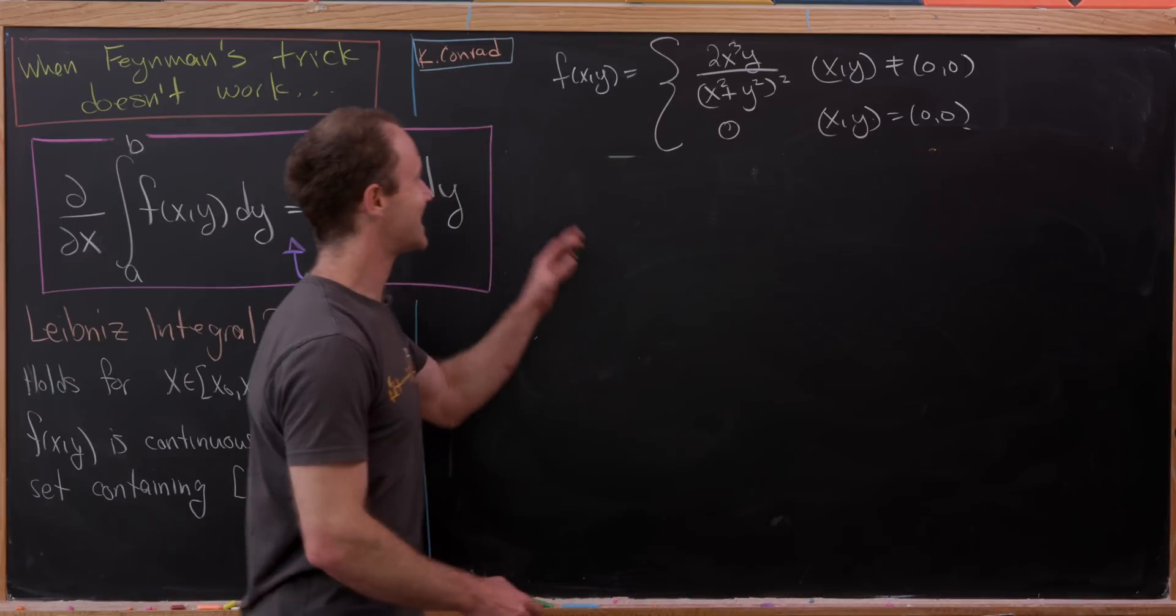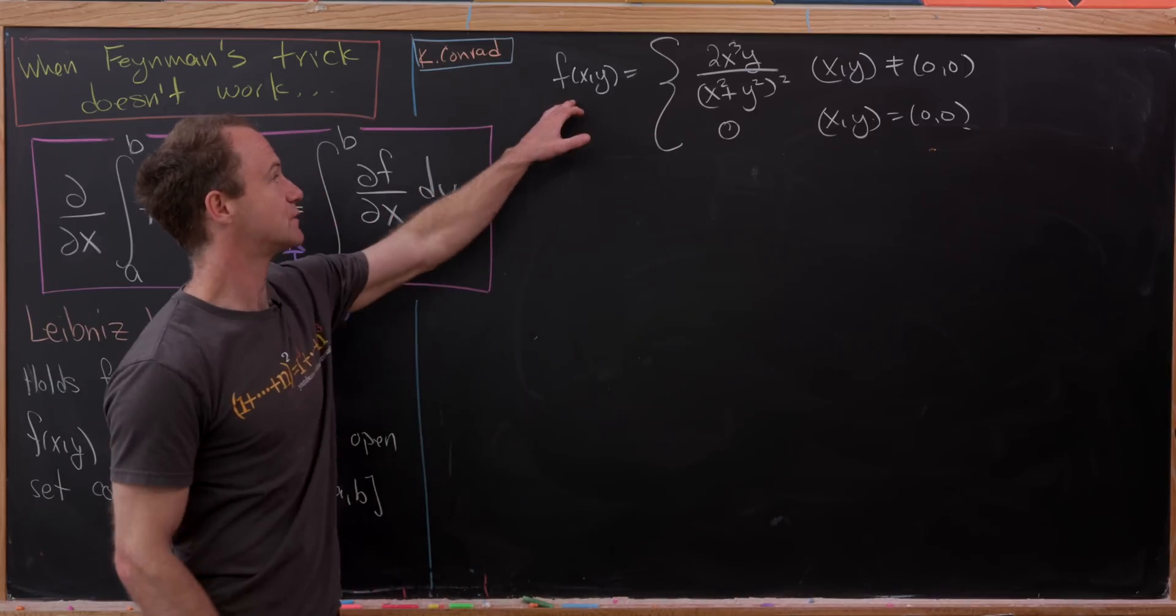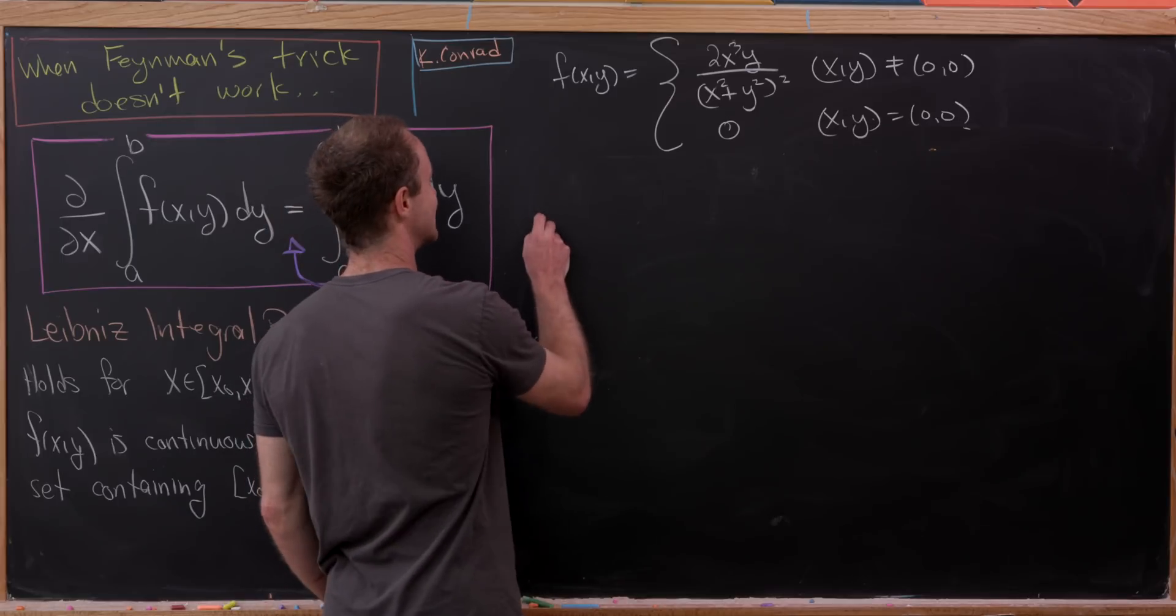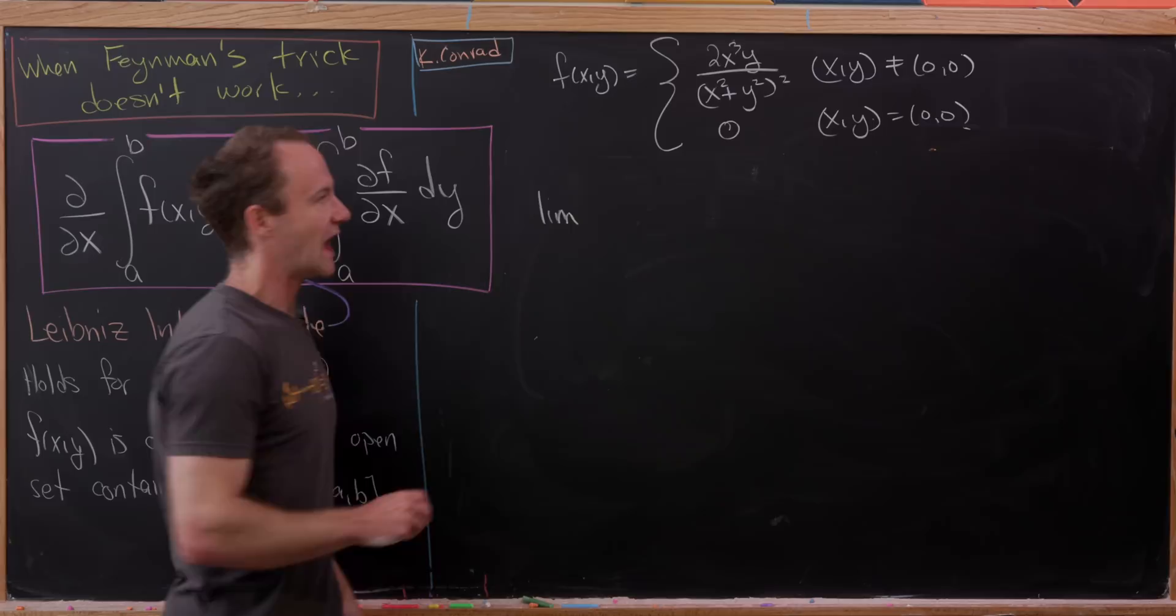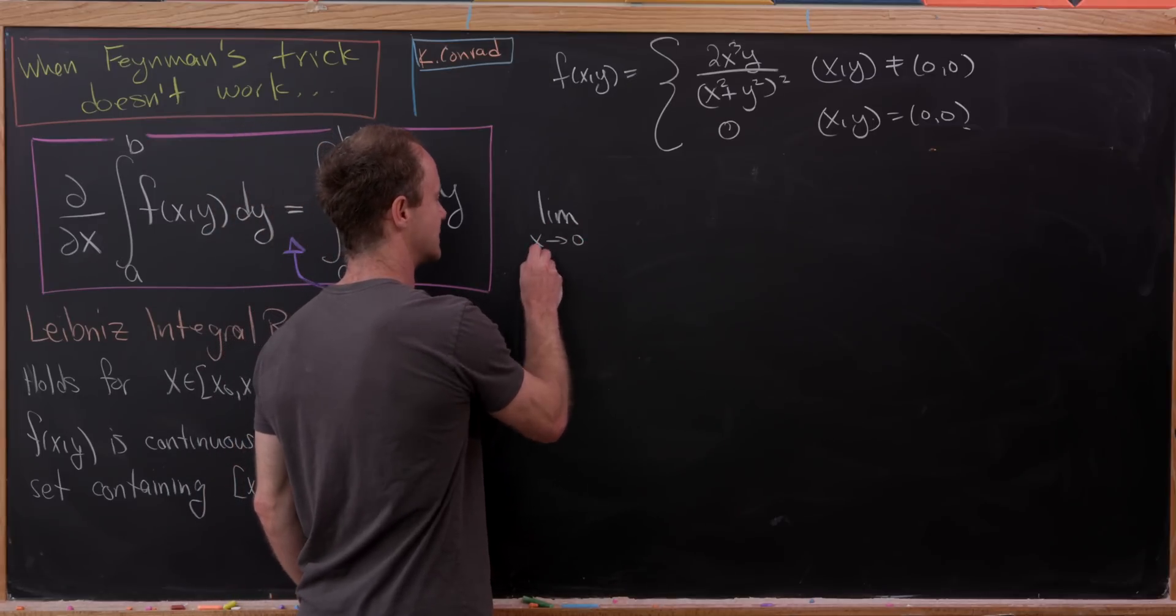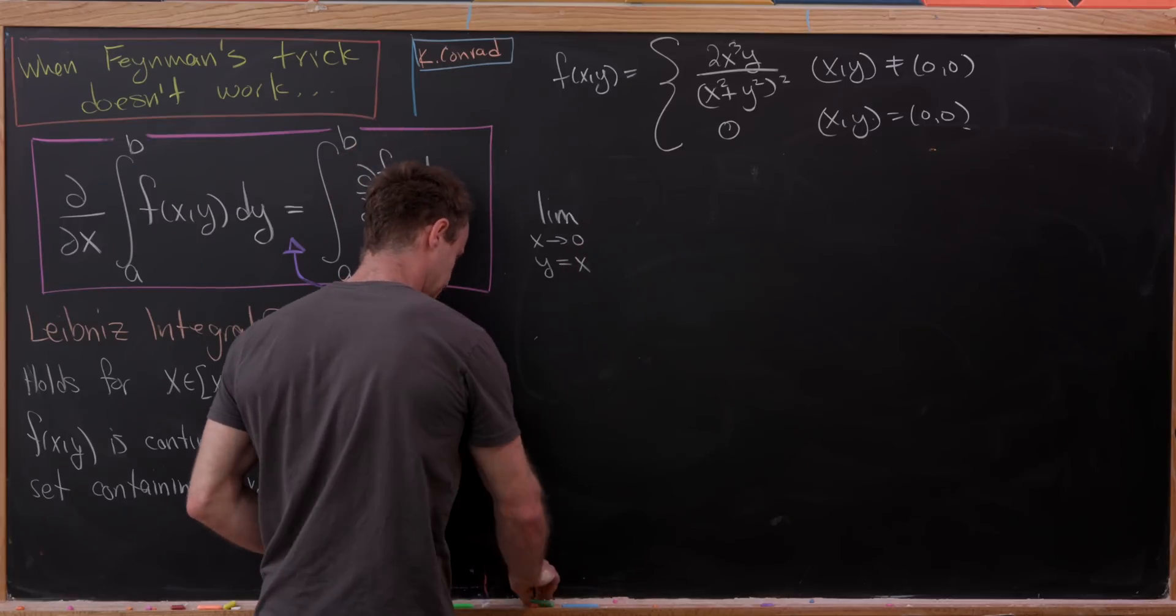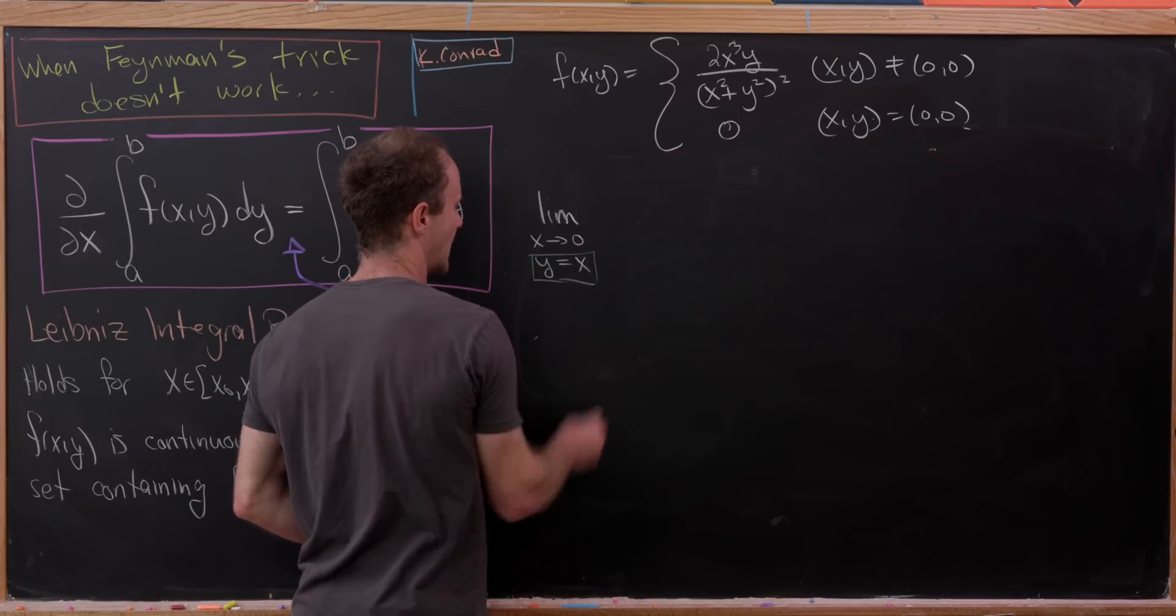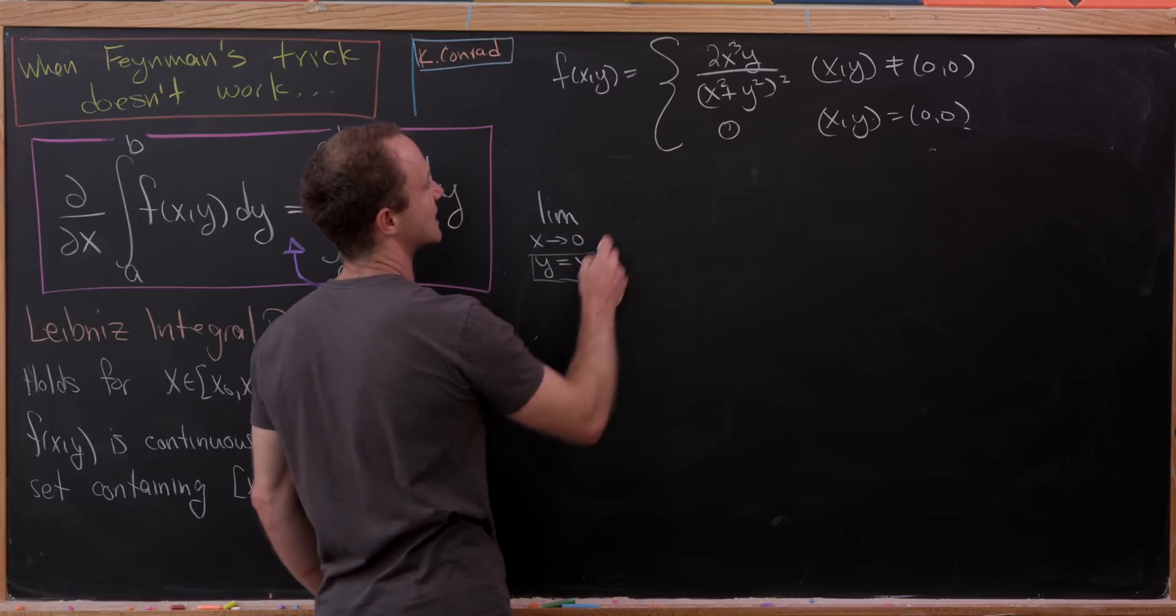But let's notice that this is not true over here, because we can show that f of xy is not continuous at the origin. And we can do that by taking the limit as x goes to 0 along the line y equals x.